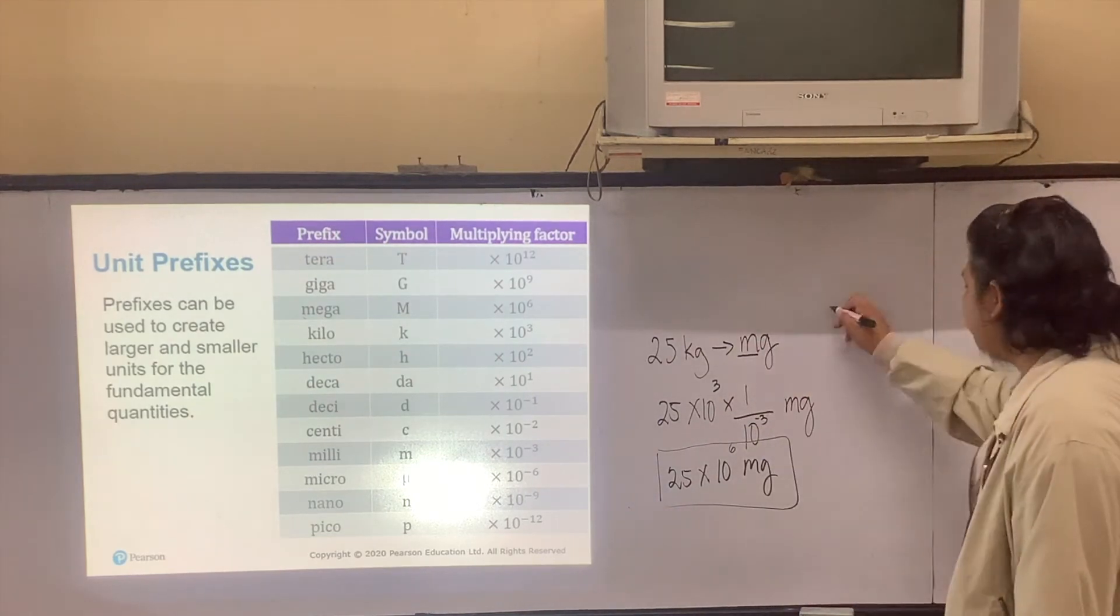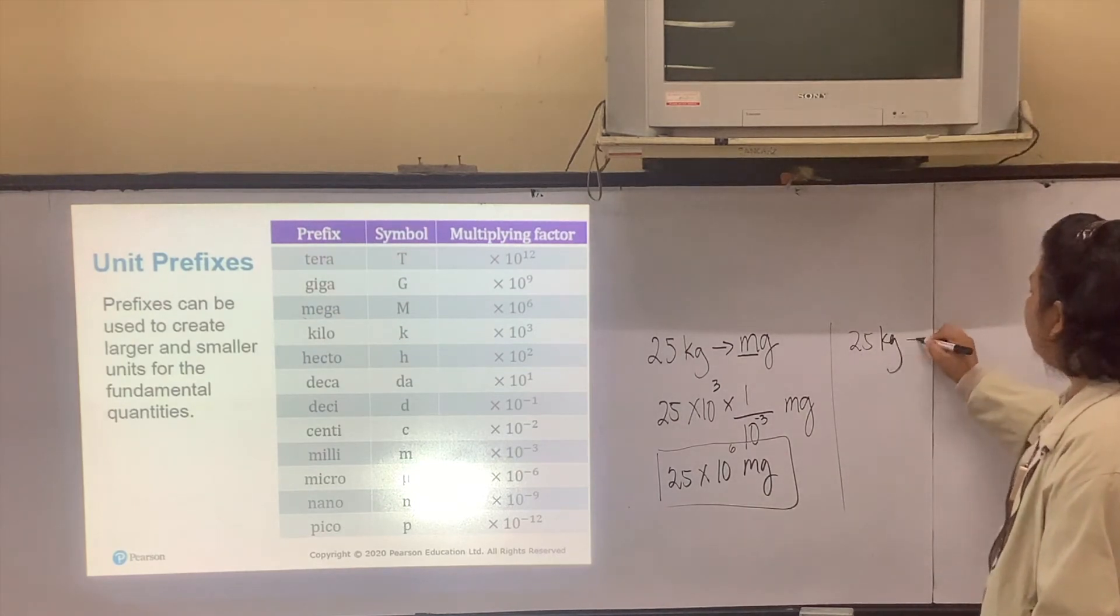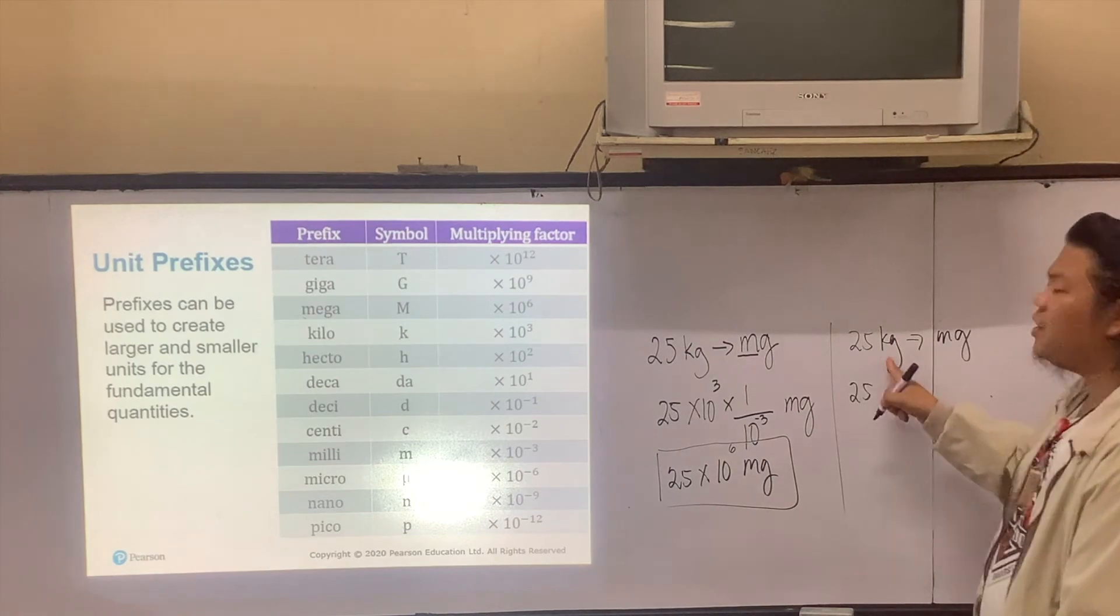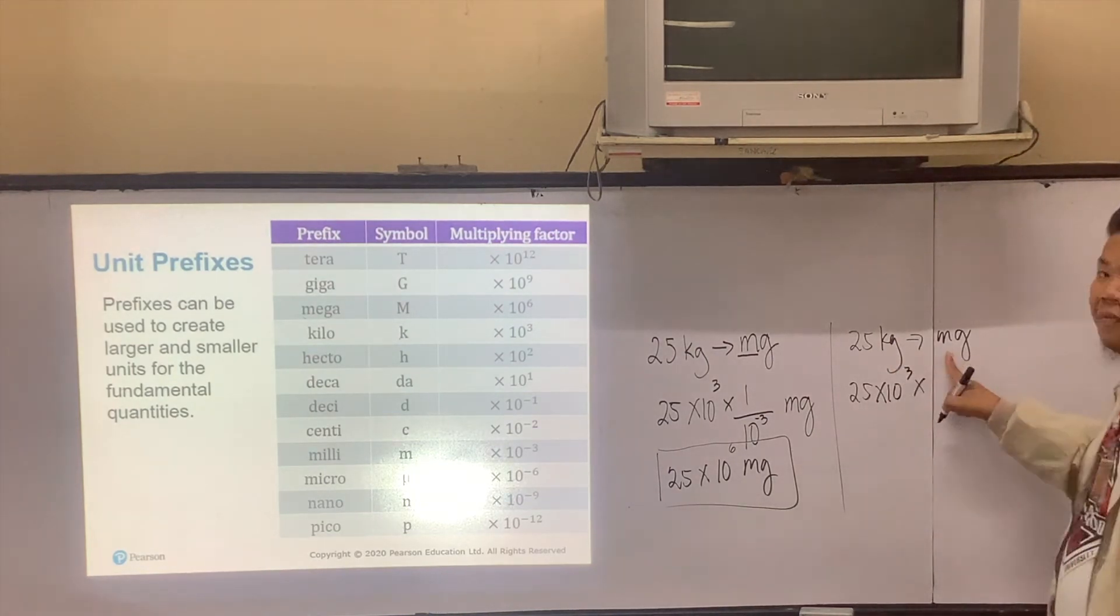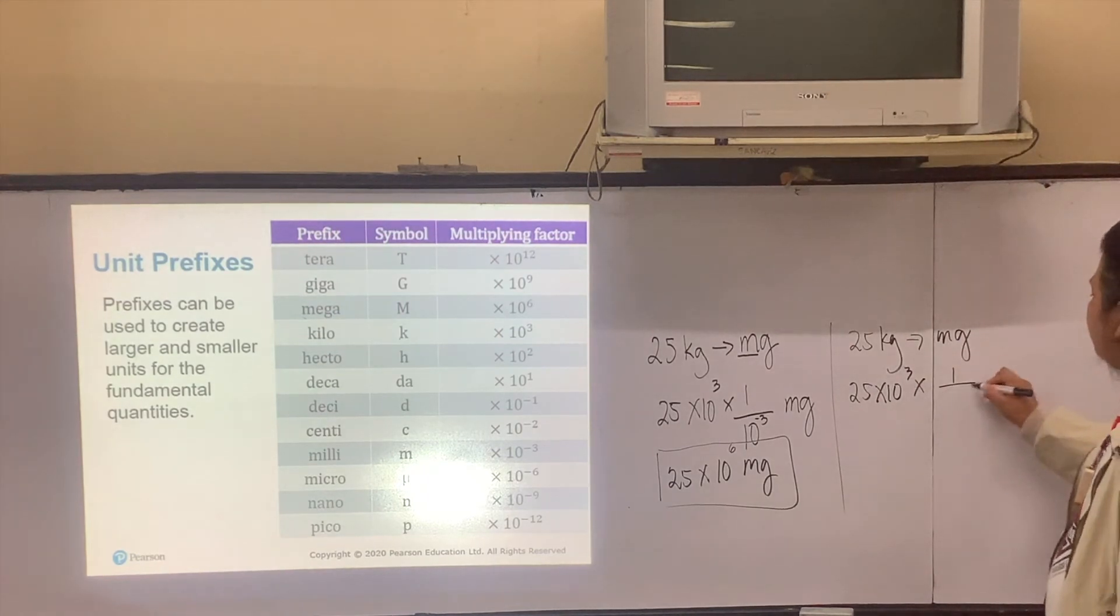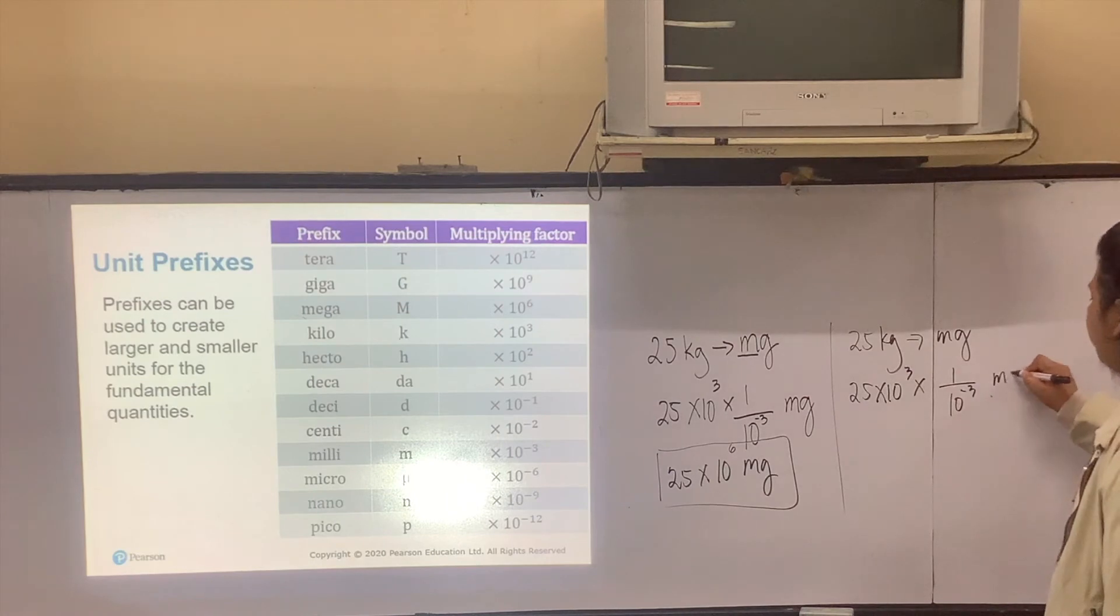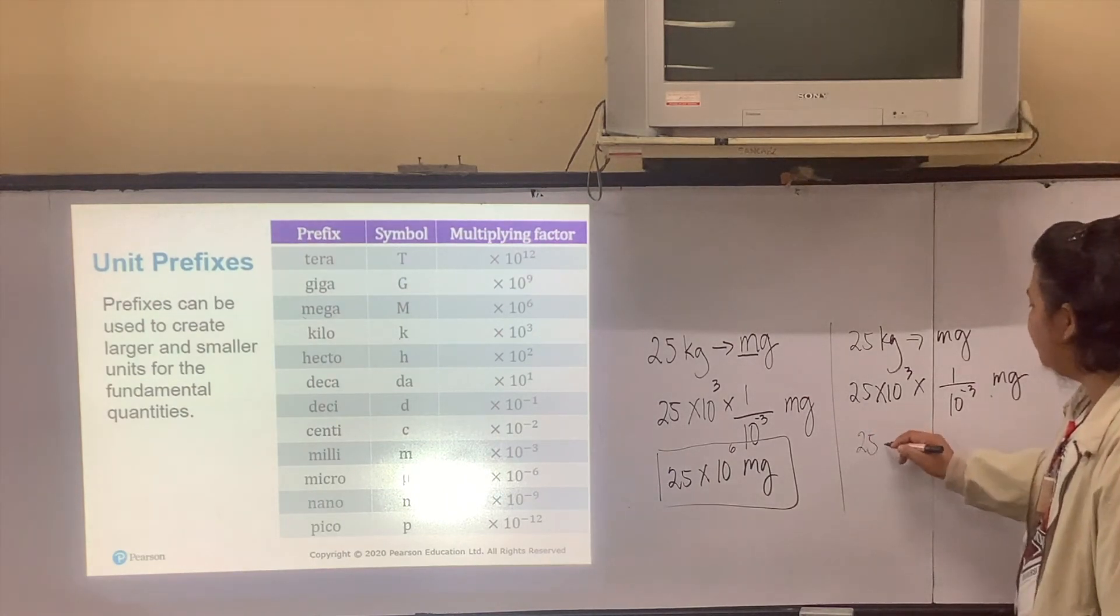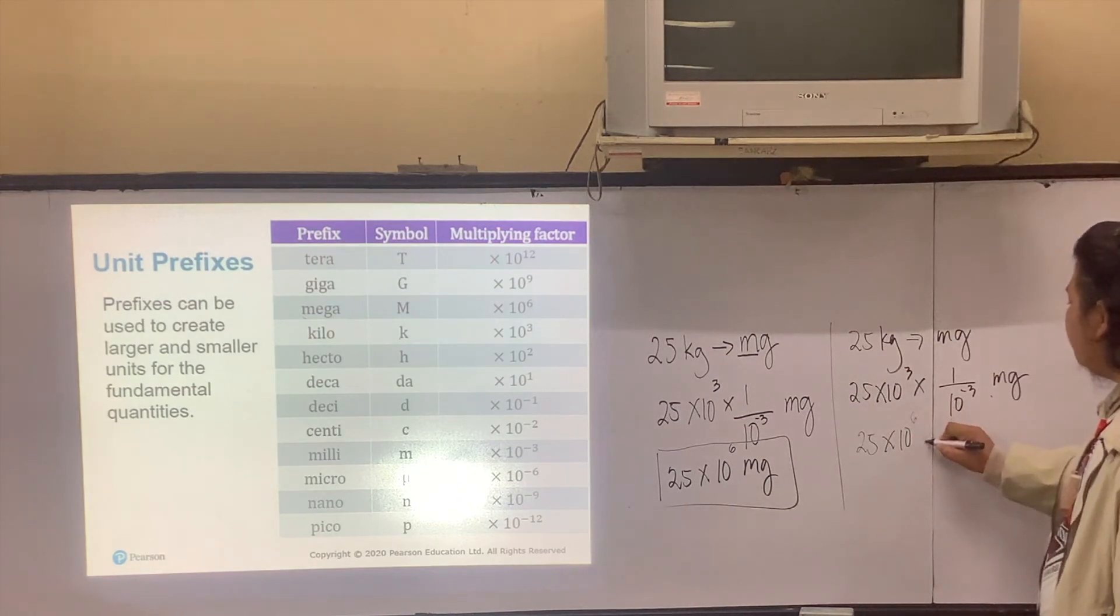I'll walk you through the process again. You have 25 kilograms to milligrams. Write 25. The value of kilo is 10 to the positive 3. The value of milli is 10 to the negative 3. Get the reciprocal of that. And then you will have 25 times 10 to the power of positive 6 milligrams.